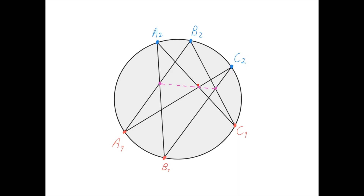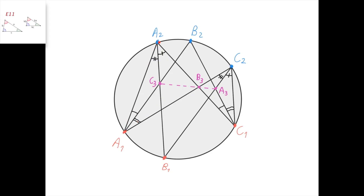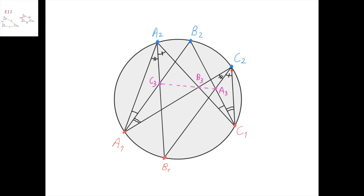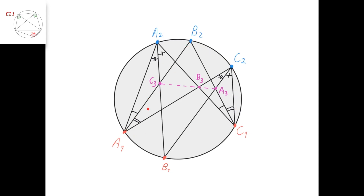Pascal's theorem states that these three intersection points always lie on a straight line. To prove this, label the intersection point of lines AB as C3, the intersection of lines AC as B3, and the intersection of lines BC as A3. Notice that triangles A1, A2, B3 and C1, C2, B3 are similar, because from the cyclic quadrilateral A1, C1, C2, A2 the relevant angles are equal. We then chase angles using four cyclic quadrilaterals: A1, C1, C2, B2; A1, C1, B2, A2; B1, C1, C2, A2; and A1, B1, C2, A2.